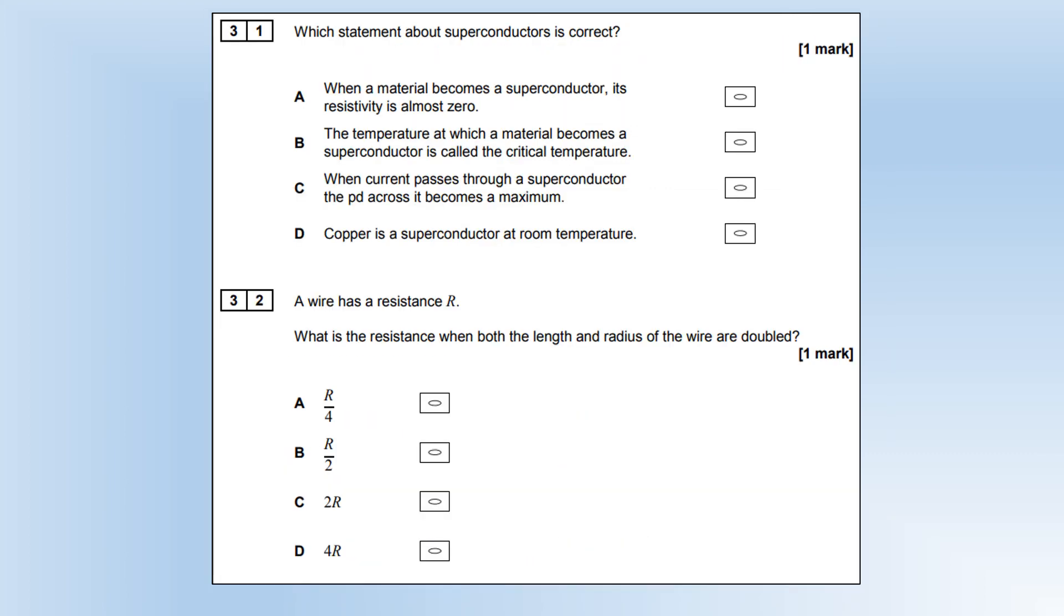Which statement about superconductors is correct? When a material becomes a superconductor, its resistivity is almost zero. That's not true, it's exactly zero. The temperature at which a material becomes a superconductor is called the critical temperature. Yep, that's fine, that's true. When a current goes through a superconductor, PD across it becomes maximum. No, PD across the superconductor is zero, because there is no energy loss. Copper is a superconductor at room temperature. No, we haven't discovered any room temperature superconductors yet, so copper certainly isn't one.